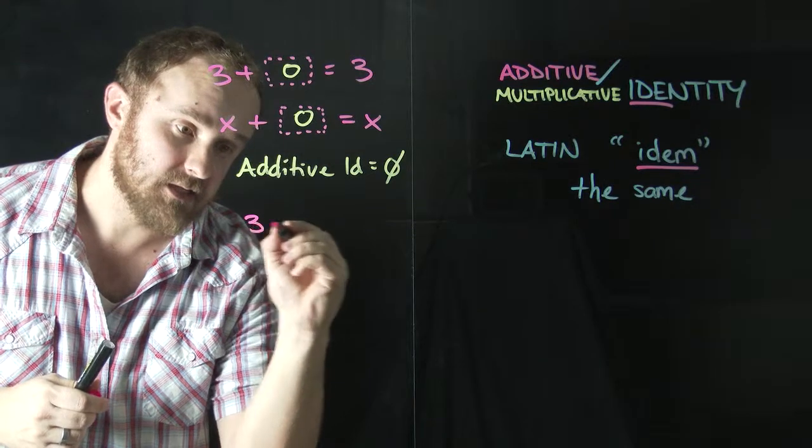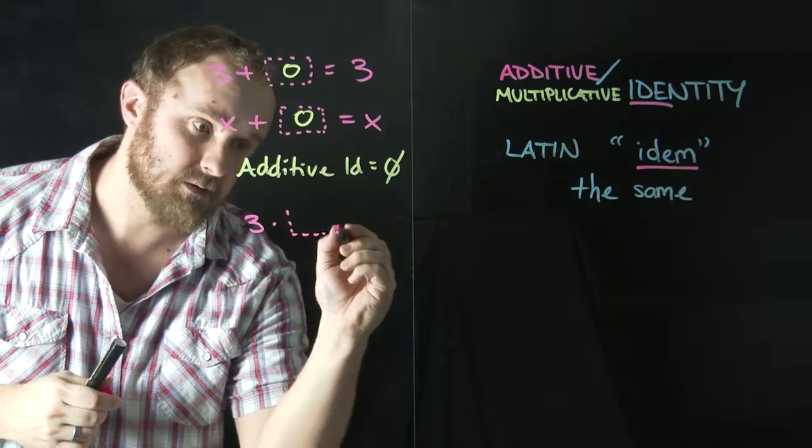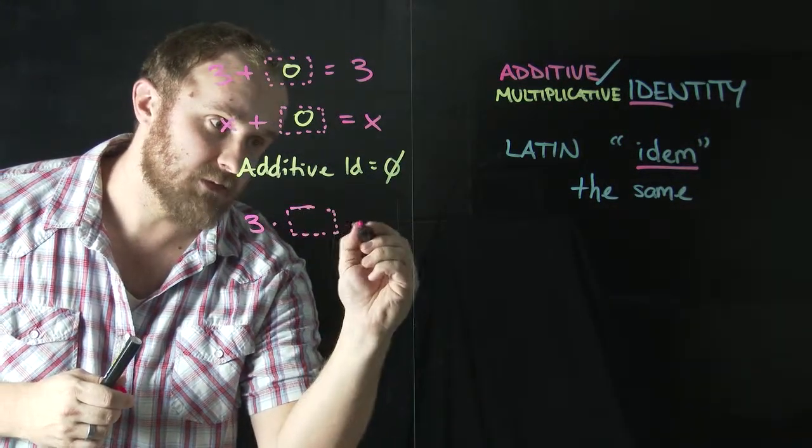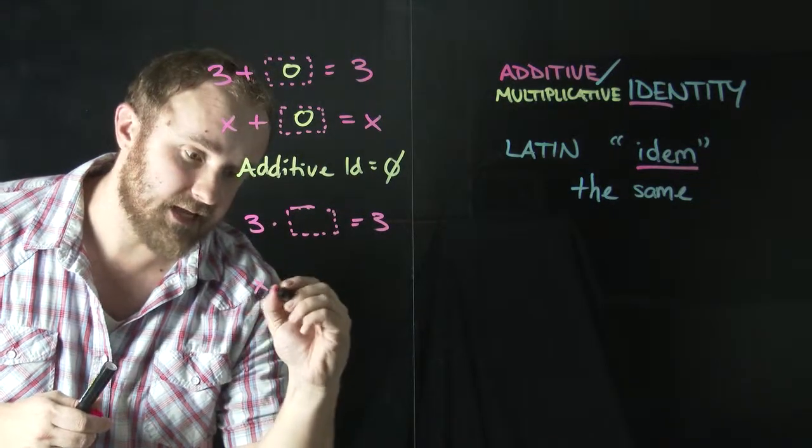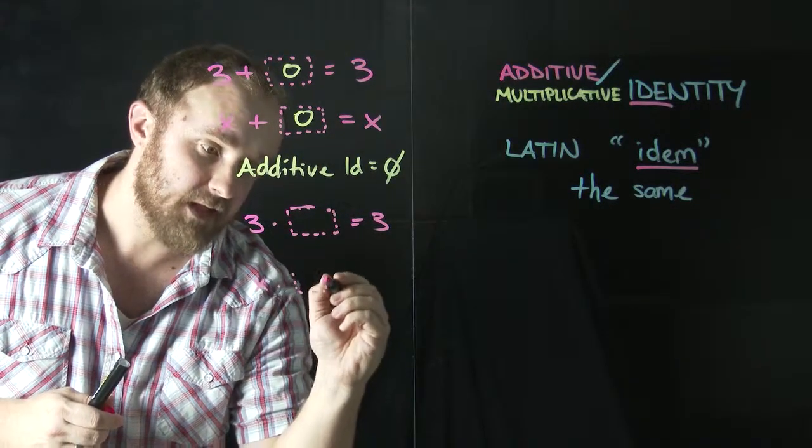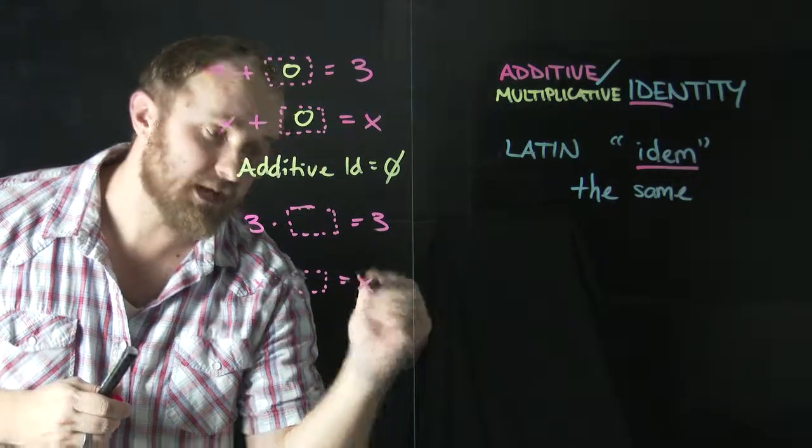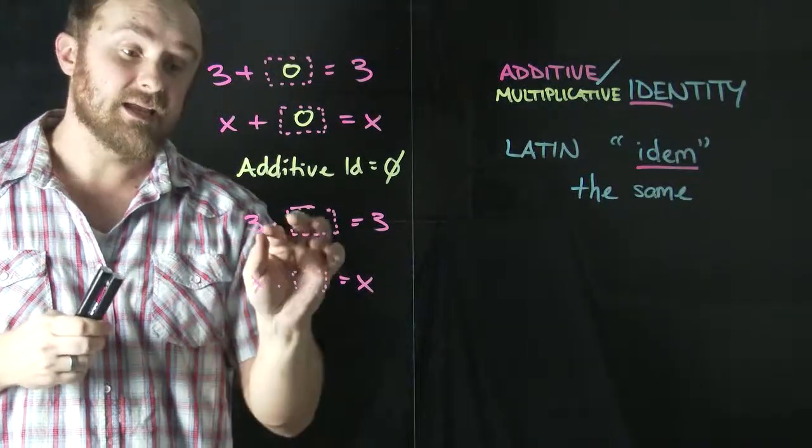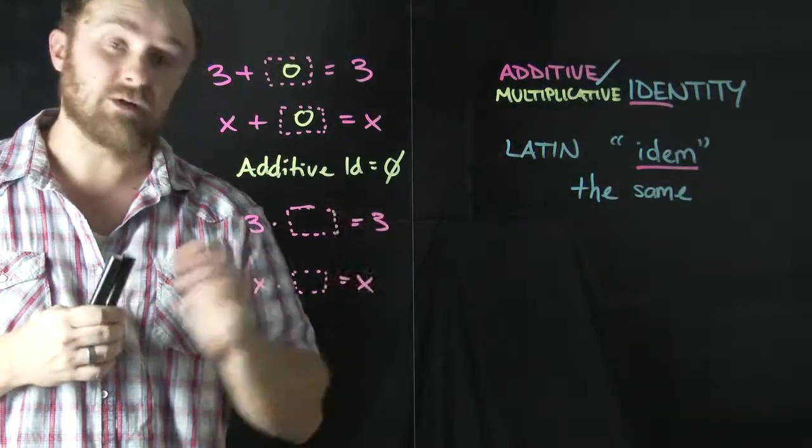So let's look at 3 times a number. And I want that to equal 3. And again, let's look at X as well, X times a number, and I want that to equal X. So what can I put in these boxes when I'm multiplying? That'll make 3 times something equal to 3.